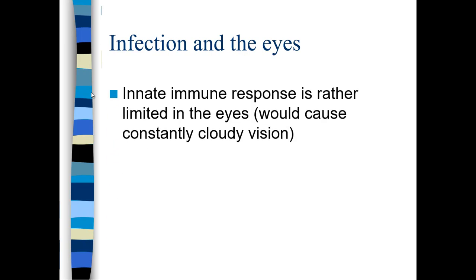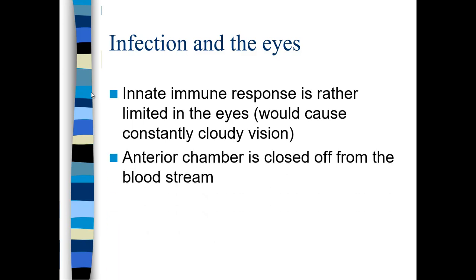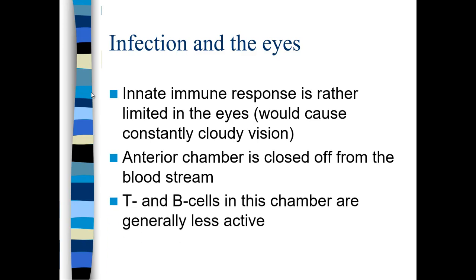In the eyes, there's not much of an innate immune response. If you had neutrophils, macrophages, and other cells of the innate immune system, you would always have cloudy vision because those cells would float across your retina and block vision. The anterior chamber of the eye is closed off from the bloodstream, so there's not a whole lot of ways for immune cells to get in there. There are T cells in the anterior chamber because it is connected to the lymphatic system, but they're generally less active.